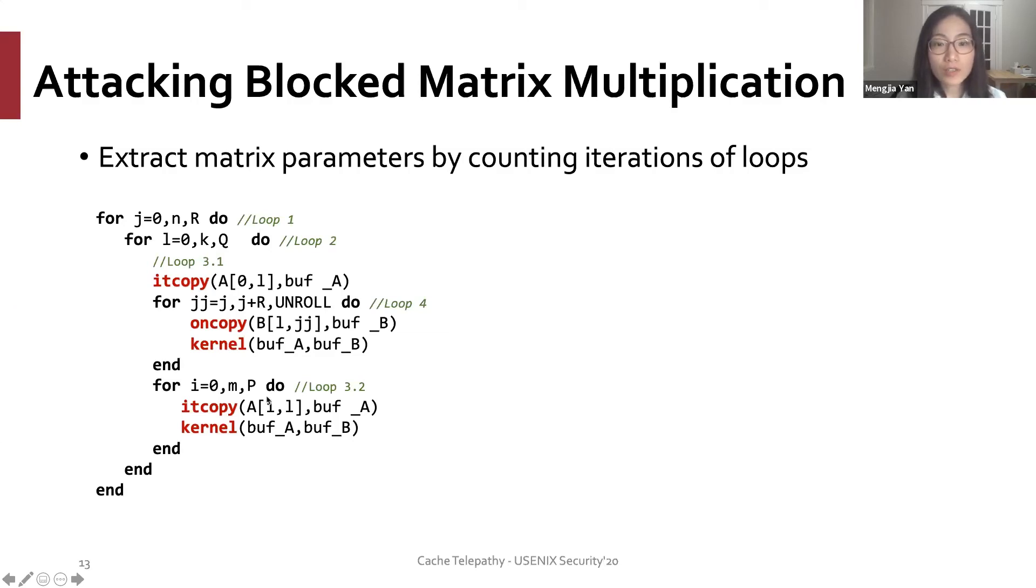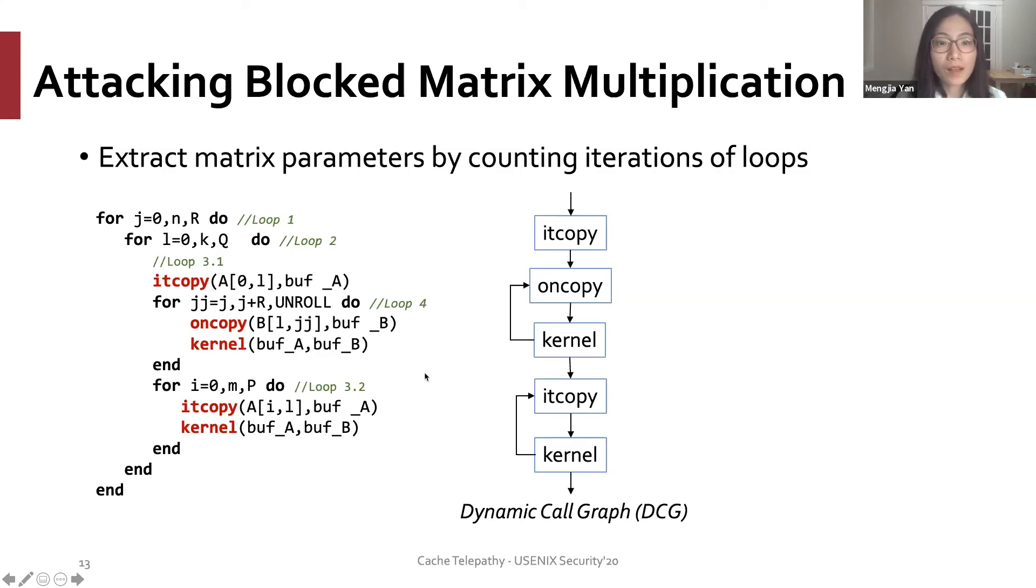The invocation of functions will follow the pattern as shown in this DCG. The number of pairs of consecutive invocations of the oncopy and kernel functions equals the number of iterations for loop 4. And similarly,